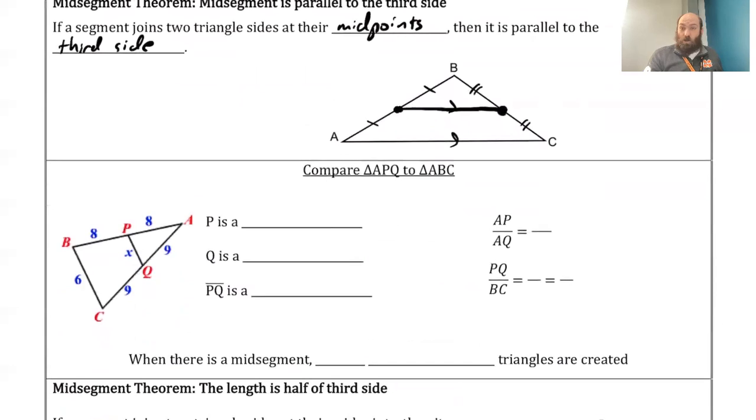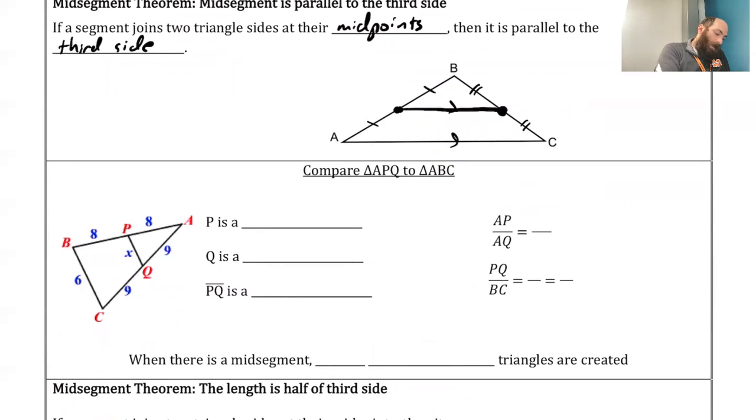So this is another way we can show we definitely have midpoints. Point P here, since it has 8 and 8 on both sides there, that means that's a midpoint. Same thing with point Q. We got a 9 and a 9. That also makes it a midpoint. Therefore, PQ is a mid-segment.